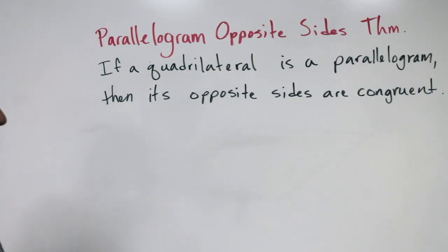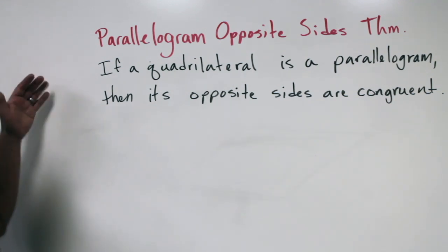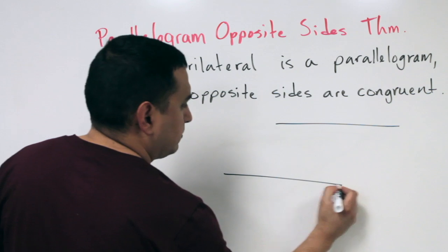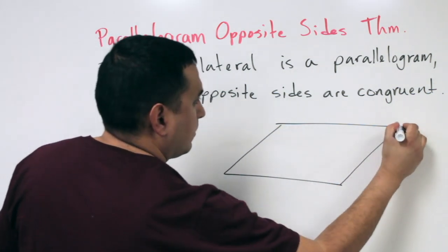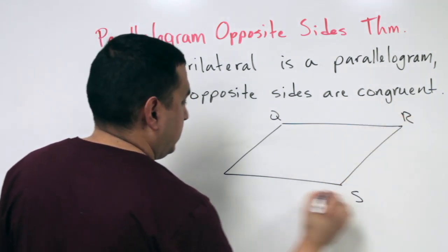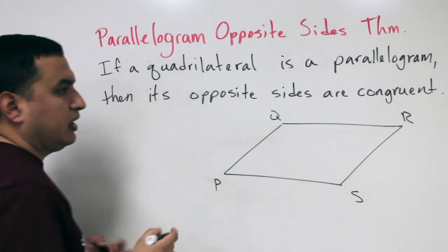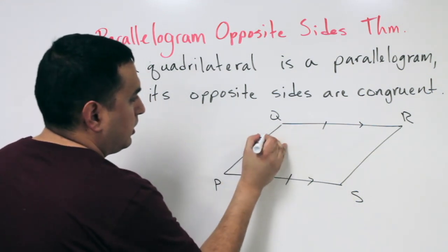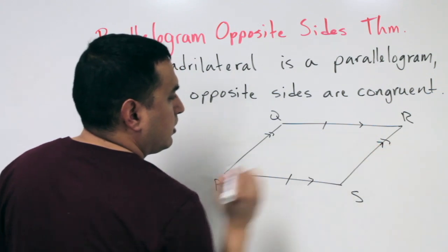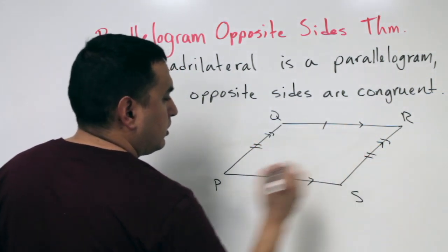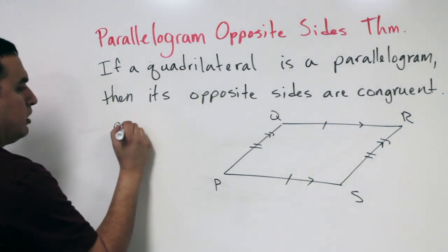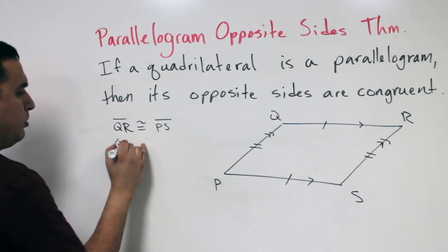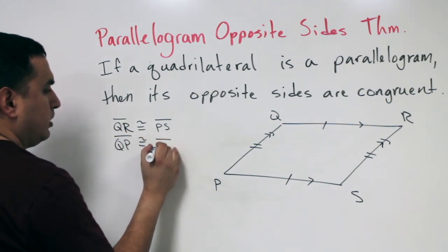We have the parallel opposite sides theorem, and what that simply says is that if you have a parallelogram, then the opposite sides are congruent. So if I draw a parallelogram, I'll call it Q, R, S, and P — the sides marked parallel are also congruent to each other, and the two slanted parallel sides would also be congruent. So segment QR is congruent to segment PS, and segment QP would be congruent to segment RS.